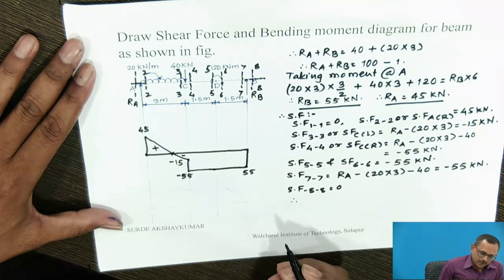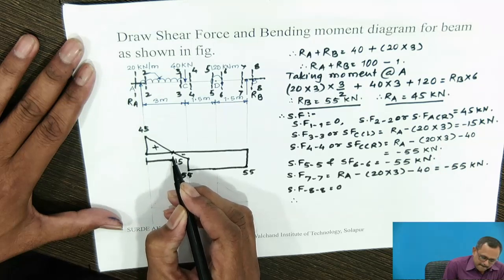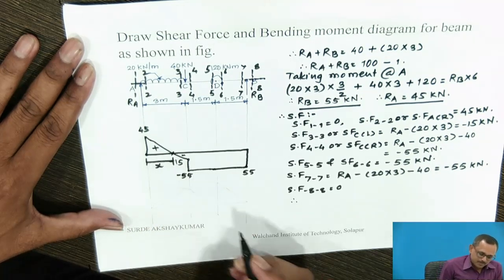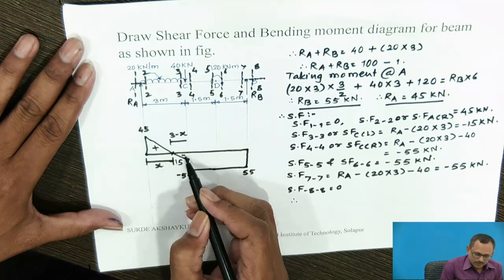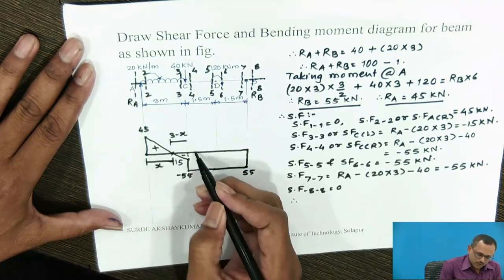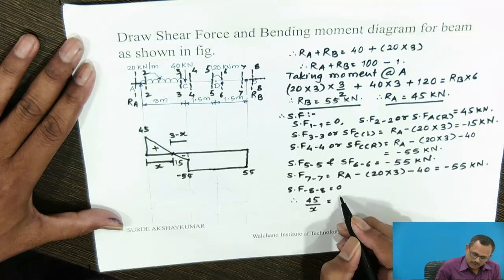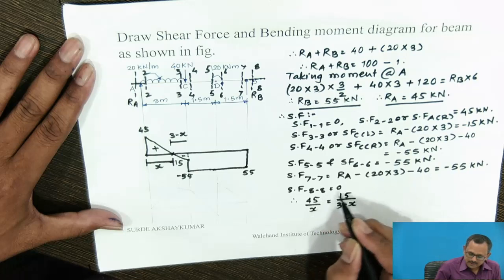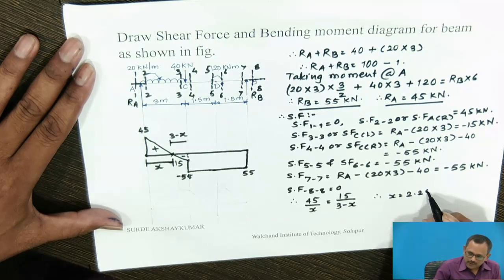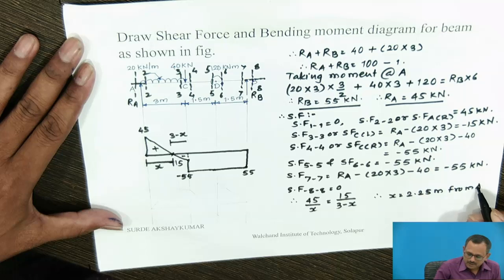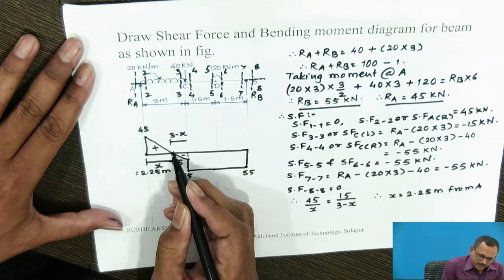To find the position of the point of contraflexure, we set shear force equal to 0 at a distance x from end A. From the geometry of the shear force diagram, using similar triangles: 45 divided by x equals 15 divided by (3 minus x). Solving, x equals 2.25 m from A. At this distance, the bending moment will be maximum.